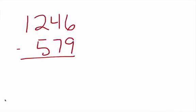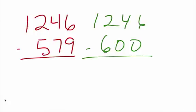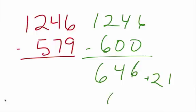Now let's move on to 1,246 minus 579. Again, we're going to bring that up to the nearest 100. How far do we have to go up to get there? 21. And so 1,246 minus 600 is 646. 646 plus 21 and we get 667.